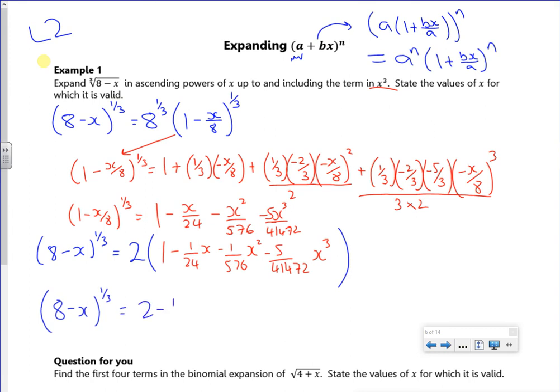So it gives me a final answer of 2 minus 1 over 12 times x minus 1 over 288 times x squared minus 5 over 20736 times x cubed. Yeah, and that's that expansion.